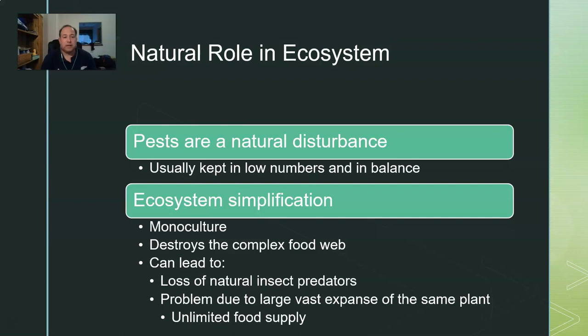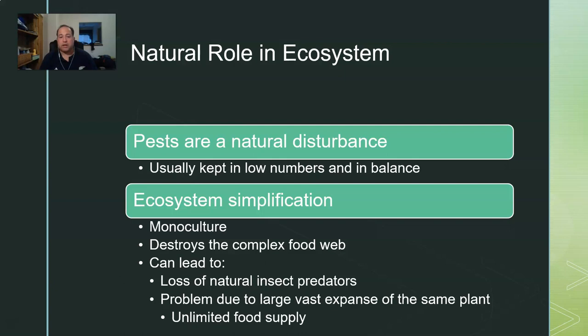In fact, pests are one of the reasons why, when we look at nature, we see a mosaic landscape. We don't see one big uniform swath of forest with all the same trees. We see different trees, some areas with grass, some areas with big trees, some areas with little trees. Part of that is due to pests and the disturbance they cause — a few trees here, a few trees there. They keep us from ecosystem simplification and monoculture, which would destroy the food web.